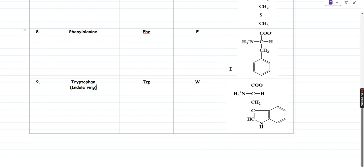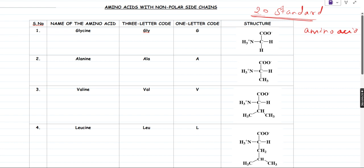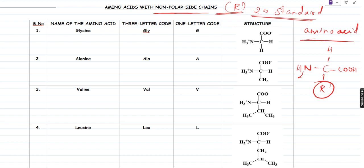Moving on, I am going to start with the structure, symbol, and names of the first 20 standard amino acids. I have made a tabulation divided into a few groups. The first group is amino acids with non-polar side chains. The R group is going to vary for each amino acid, and we classify the amino acid based on the nature of this R group. If this R group is non-polar, then we have a set of 9 amino acids. The first one is glycine — three-letter code GLY and one-letter code G. The R group is simply H.